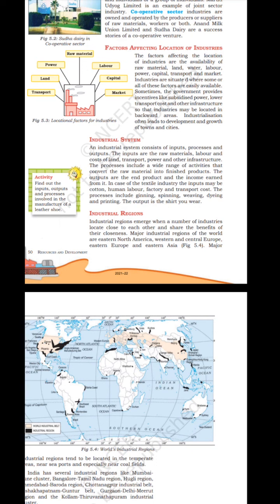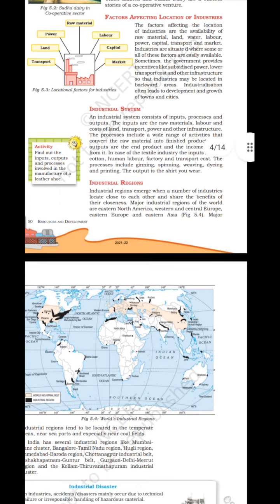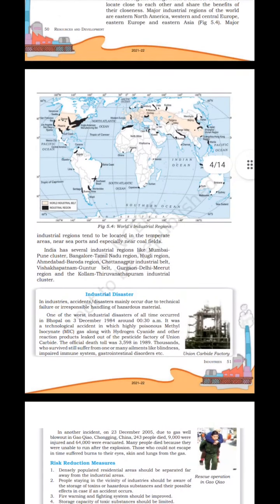Major industrial regions of the world are Eastern North America, Western and Central Europe, Eastern Europe, Eastern Asia and India. Major industrial regions tend to be located in temperate areas near seaports and especially near coal fields.